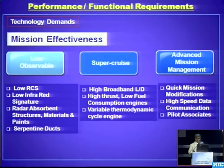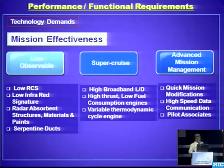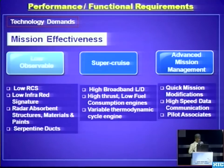Further, low observability itself can be decomposed into low radar cross-section, all electromagnetic signatures, and infrared signatures. In order to achieve that, certain technologies are required — radar absorbent materials, radar absorbent structures newly coming up, and paints. There are also aerodynamic challenges like serpentine ducts to avoid cavitation inside the ducts. This is how the analysis has to be done for each demand derived from the various mission segment requirements.